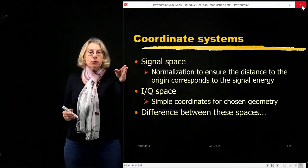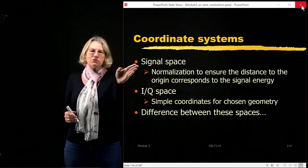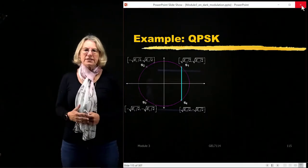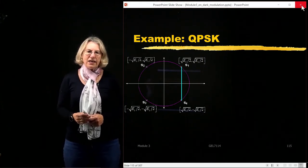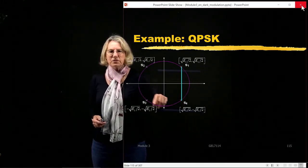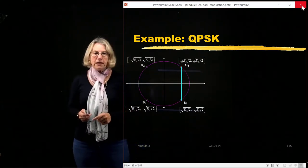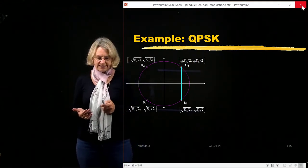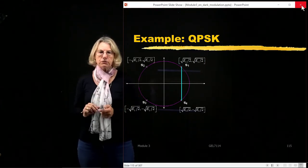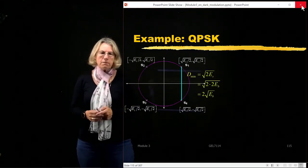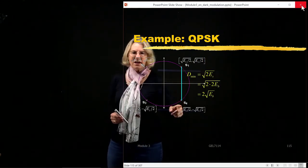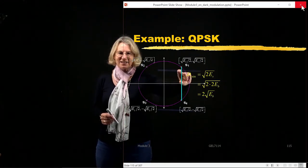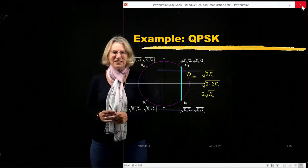I'll take you through the normalization between IQ space and signal space, because that's really the only difference between these two spaces. Let's take a simple example of QPSK. In QPSK, we have the coordinates in terms of the energy per symbol: plus and minus the square root of ES over 2 for both the x and y coordinates. The minimum distance is between adjacent points, and calculating it gives us a square root of ES over 2 plus a square root of ES over 2.